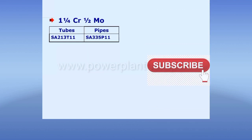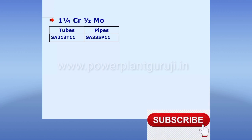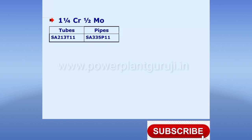Usually this metallurgy is used where the component temperature is not to exceed around 500 degrees centigrade. So up to around 500 degrees centigrade we can use this, and designers are using this. But wherever the metal temperature is expected to go beyond 500 degrees centigrade — 510 degrees centigrade — then T11 cannot be used.